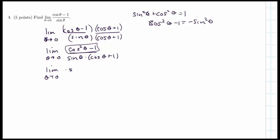So now I have negative sine squared theta over sine theta times cosine theta plus one. This cosine, this sine, and that sine cancel.